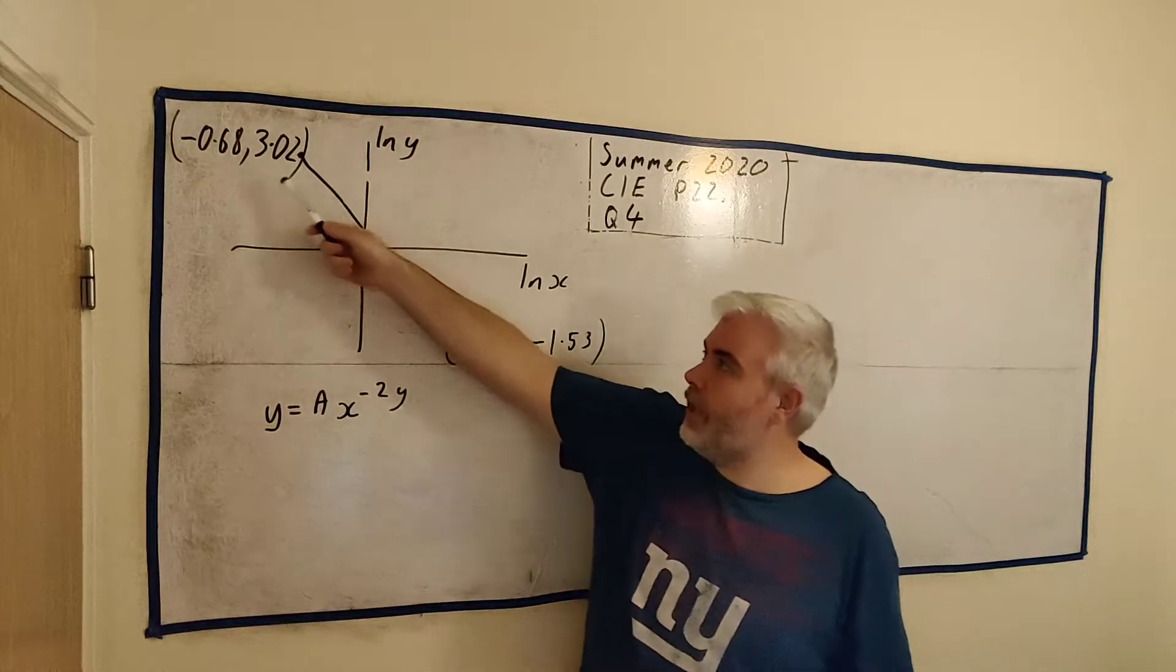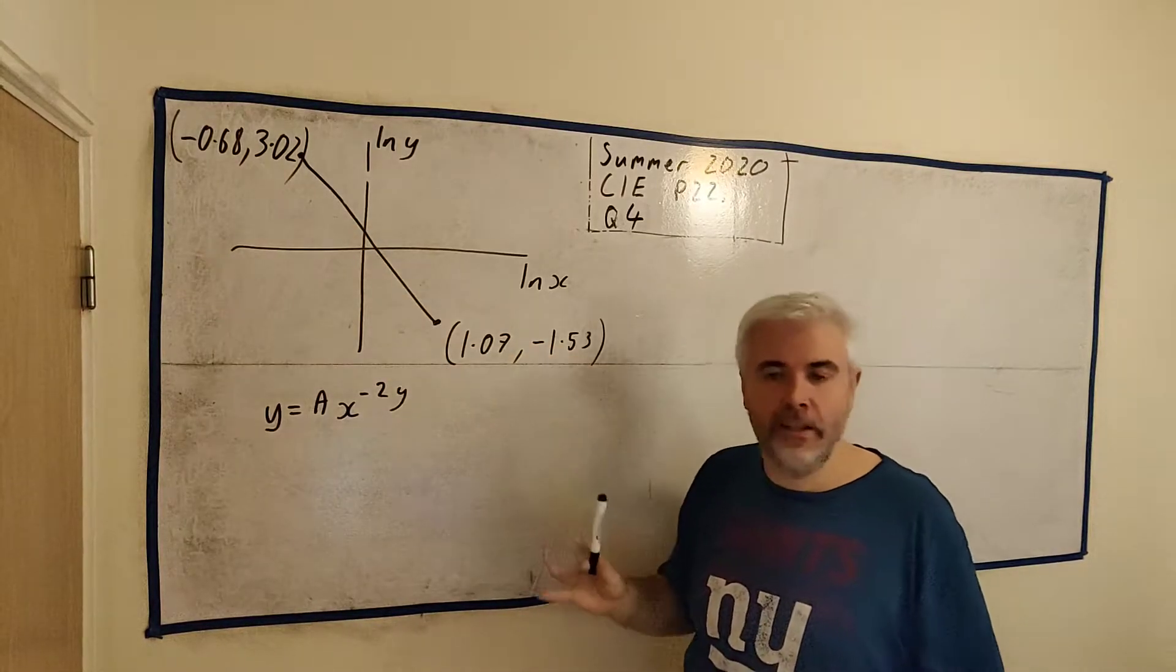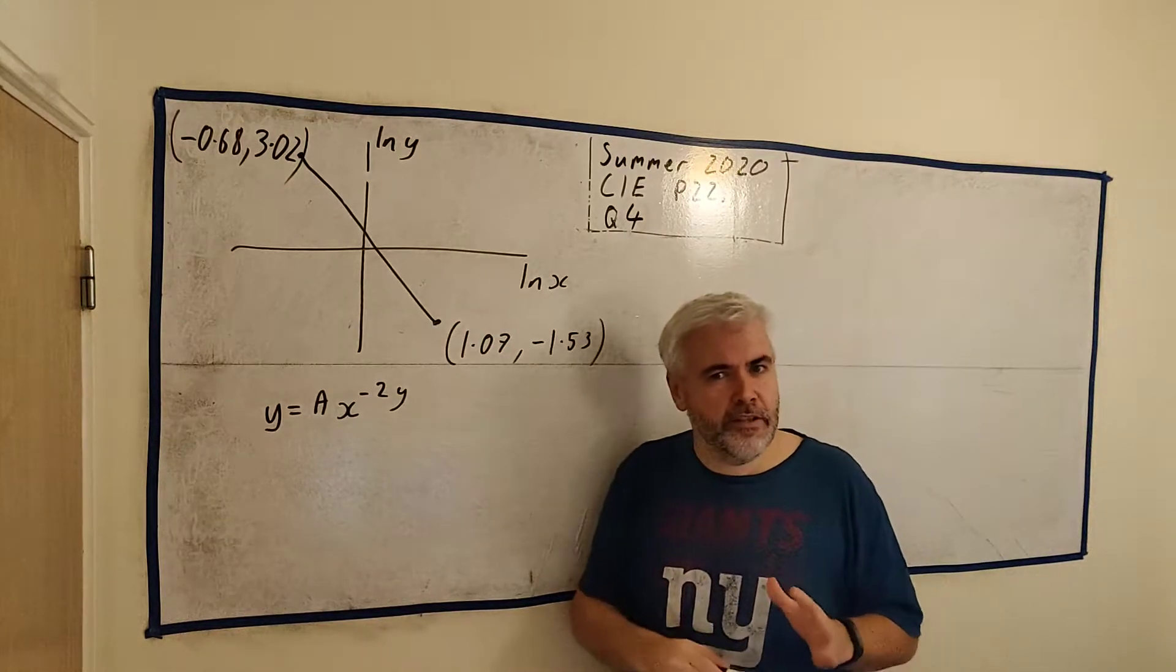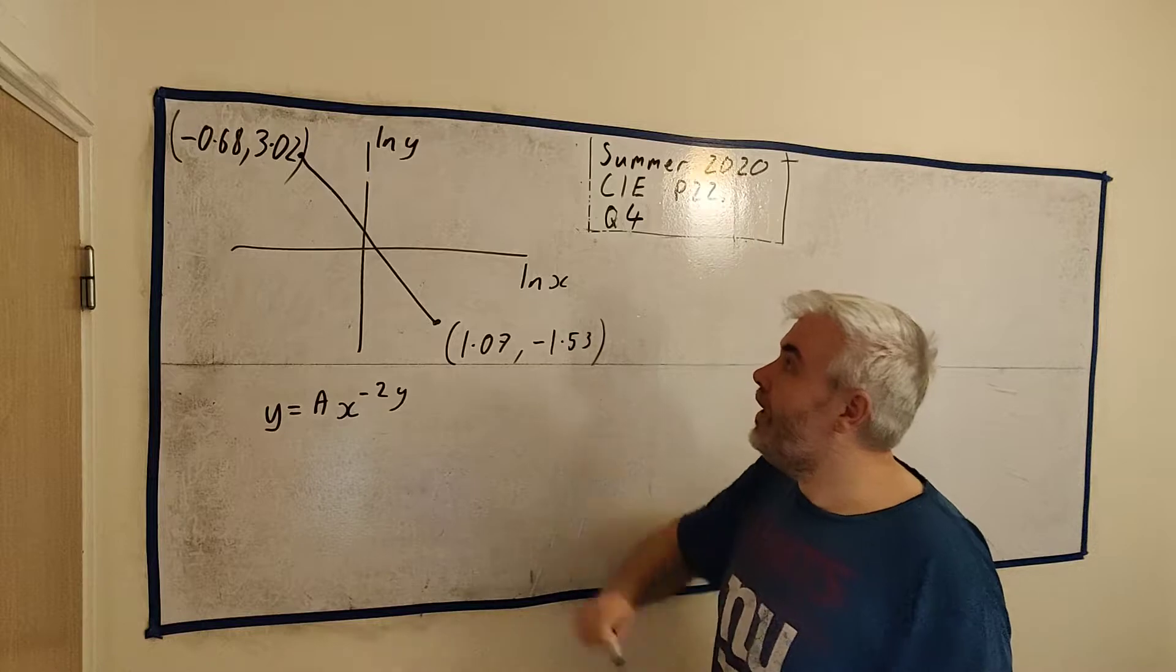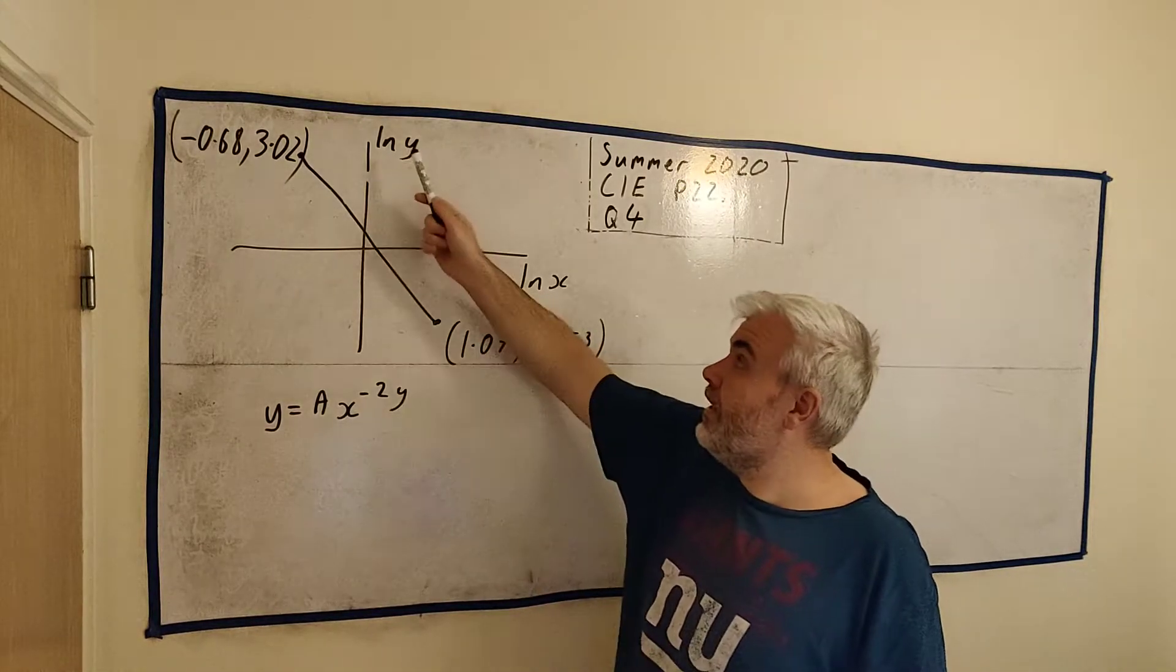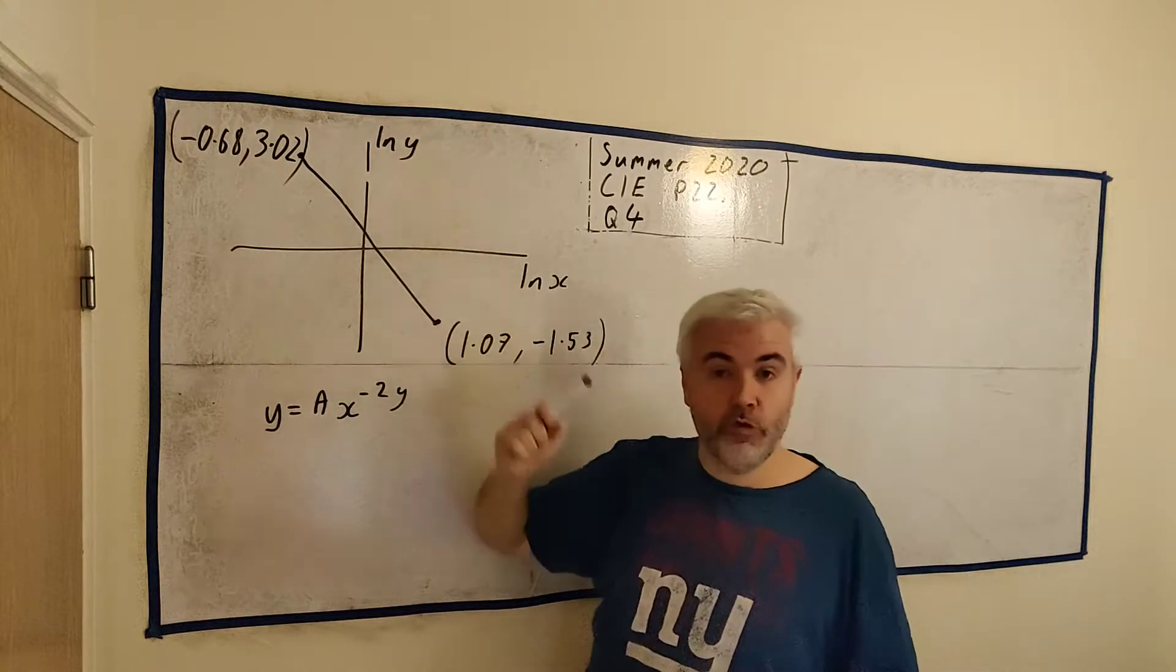In this question they give us this graph here with a couple of numbers so we understand a lot about this. It's just a normal line with one big difference, a difference that throws a lot of students off. It's not xy, it's not an xy graph, it's natural log x and natural log y.